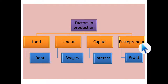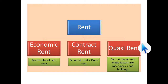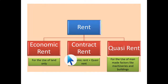So the distribution of income is: rent to land, wages to labor, interest to capital, and profit to the Entrepreneur. Next, we will see individually how rent, wages, interest, and profit occur. Let's start with rent. Rent is a reward for the use of land. There are three types of rent: economic rent, contract rent, and quasi rent.